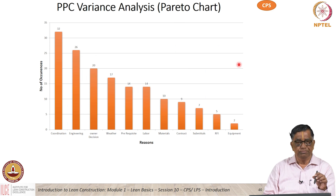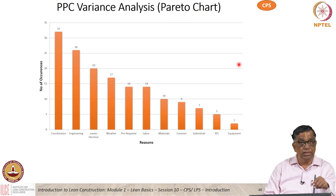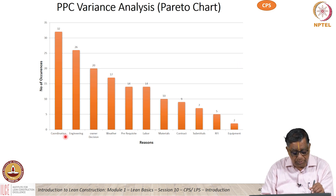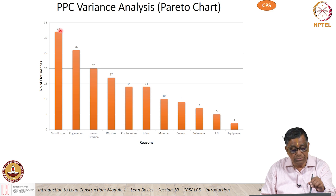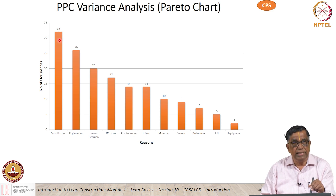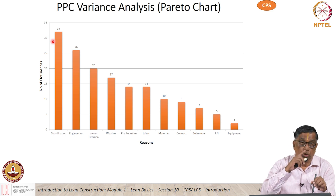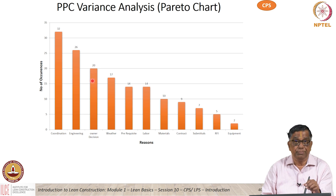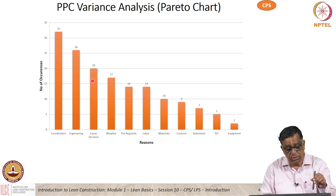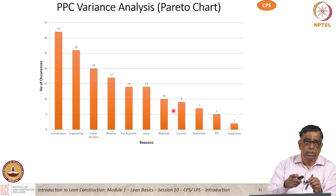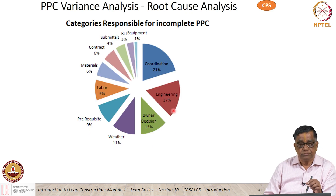Consistently 100% PPC is not good; consistently low PPC is also not good — that means you are not able to plan or perform. Something around 80 to 90% PPC consistently is what we are quite happy with. When something is not being done properly, we identify the reasons — for example, arranged in decreasing order of magnitude. Here we have coordination problem, design problem, owner decision, prerequisites not done, and so on. How many times does a reason occur again and again? If coordination is the main problem occurring so many times, I need to see why my coordination is not good. This Pareto chart gives the order of importance of the various problems.